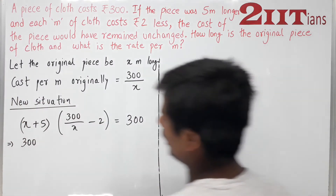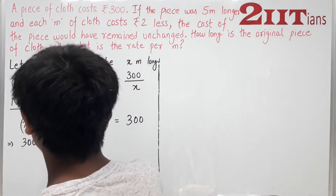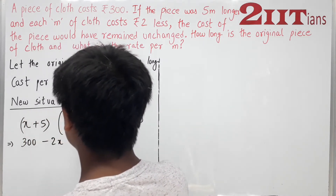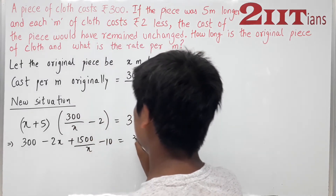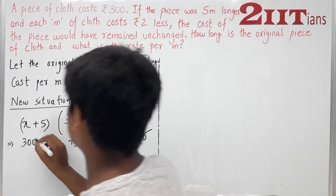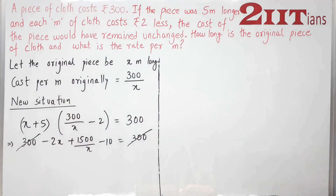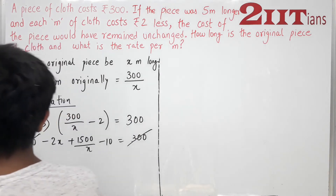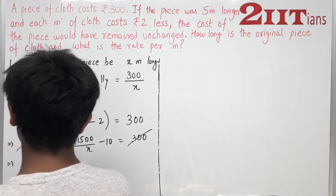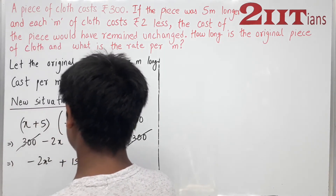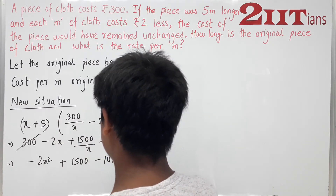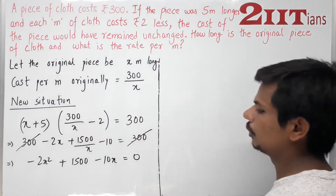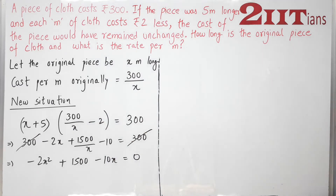Setting up the equation: (x + 5) multiplied by (300/x − 2) equals 300. Expanding and simplifying: 300 + 1500/x − 2x − 10 = 300. Multiplying through by x gives: −2x² − 10x + 1500 = 0. This is a quadratic type situation.